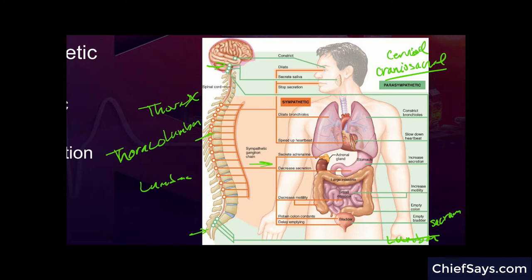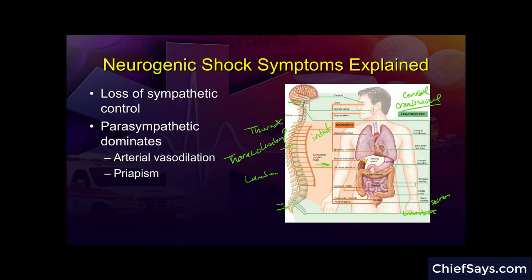Where the injury is to the spinal cord that results in neurogenic shock will dictate the vital signs we observe. For example, if the injury is within the thoracolumbar region, then the sympathetic nervous system is probably impacted. The portion of the sympathetic ganglion communicating with the lower abdomen and organs will be affected. The lower portion of the parasympathetic nervous system will lose communication, but the upper parasympathetic and some upper sympathetic nervous system will remain intact above the level of injury. Based on vital signs, we can determine which part of the nervous system has been impacted, which helps explain why some patients in neurogenic shock have bradycardia and others do not.